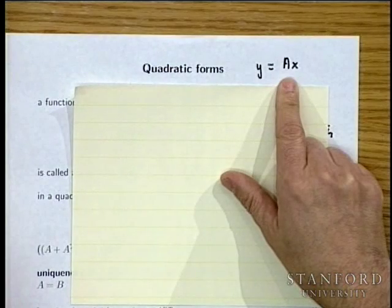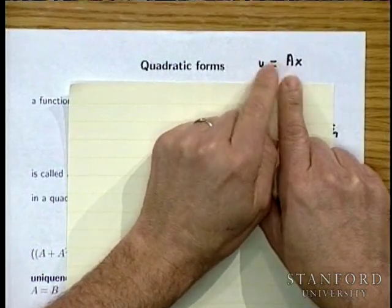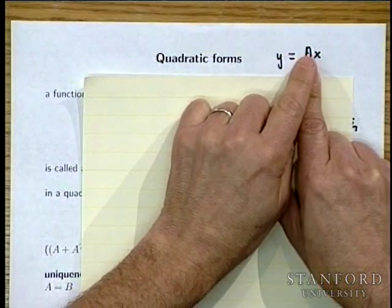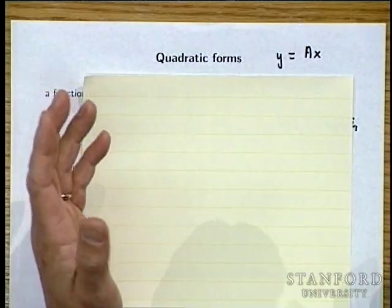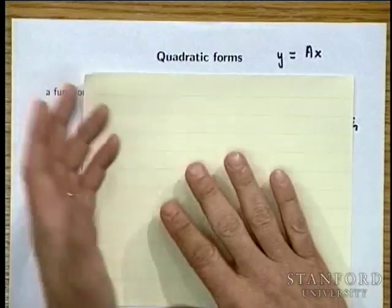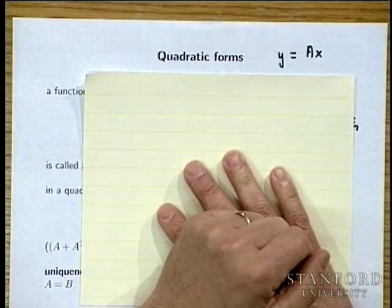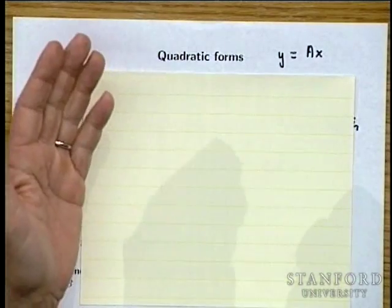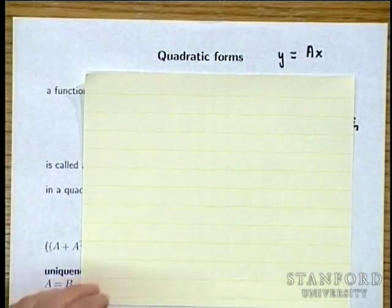For a linear mapping Y equals AX, if A is not equal to A-tilde, then Ax and A-tilde x differ for some x — you can verify this by plugging in x equals e_i, which gives the i-th column of A. So if two people have two different matrices and claim they produce the same mapping for any x, you can just go column by column and check. That's not the case for quadratic forms.